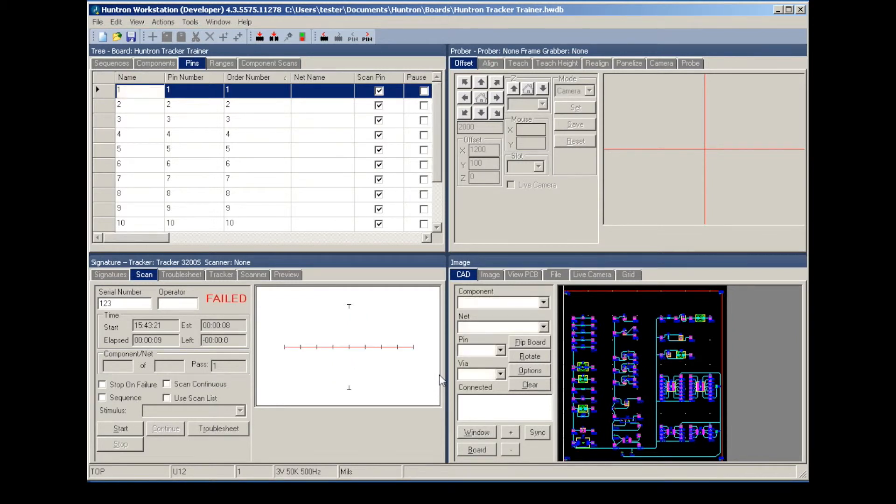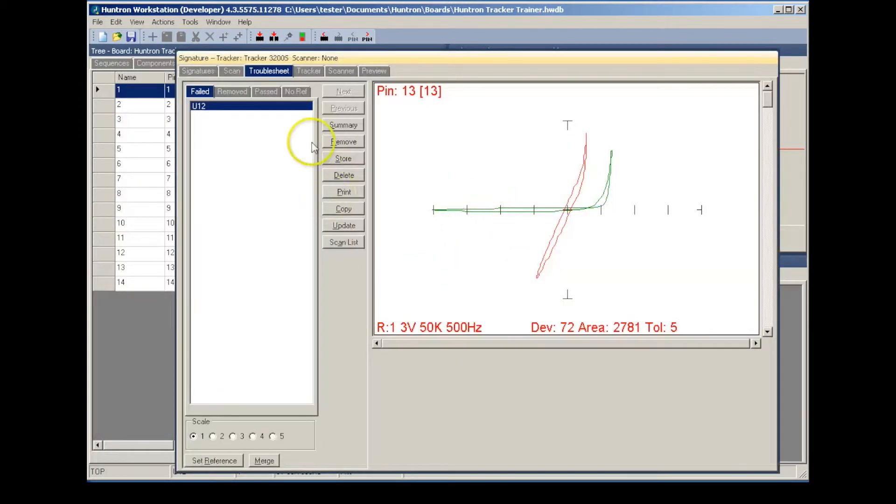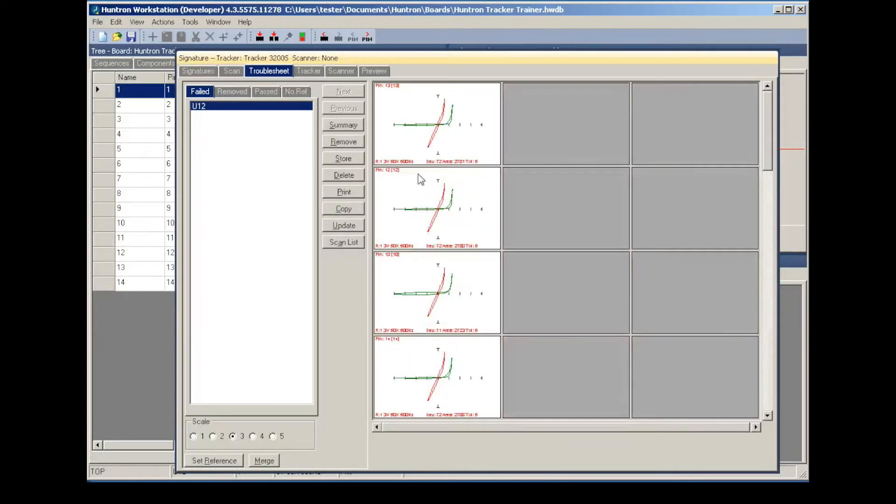Signatures of a suspect board are compared to stored good signatures and displayed on the screen for easy analysis. Failed pin signatures are shown in the workstation troublesheet in contrasting colors where green is the good signature and red is the failed signature.